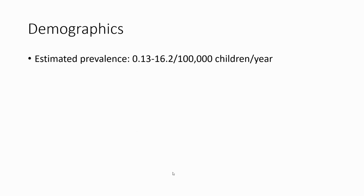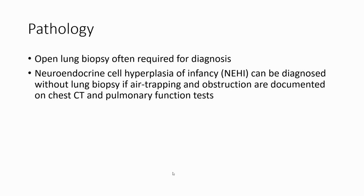Demography: estimated prevalence around 0.13 to 16.2 per 100,000 children per year. Open lung biopsy is often required for diagnosis. Neuroendocrine cell hyperplasia of infancy can be diagnosed without lung biopsy if air trapping and obstruction are documented on chest CT and pulmonary function tests.